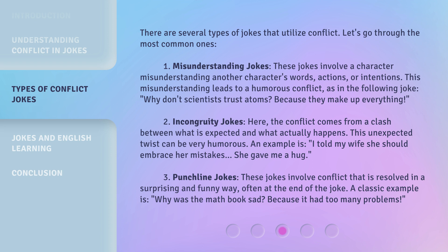3. Punchline Jokes: These jokes involve conflict that is resolved in a surprising and funny way, often at the end of the joke. A classic example is: Why was the math book sad? Because it had too many problems.